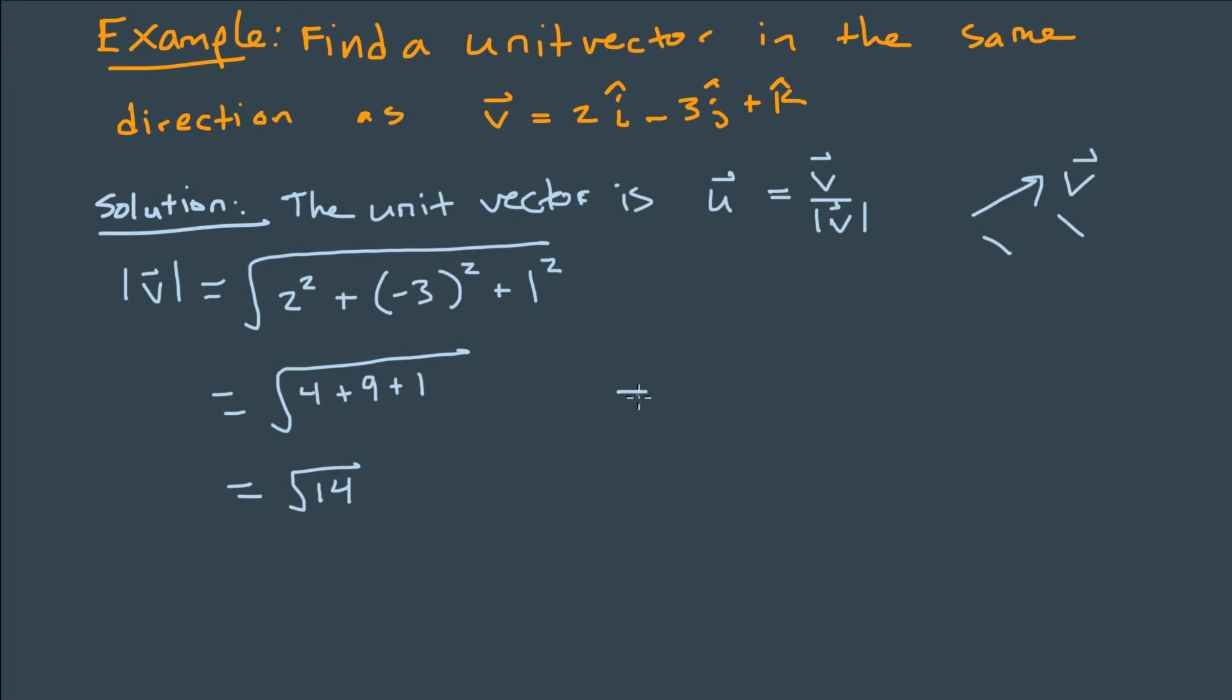So then our unit vector, vector u, will be 1 over square root of 14 times vector v. Well, to multiply a vector by a constant like this, I just multiply each component by 1 over square root of 14.